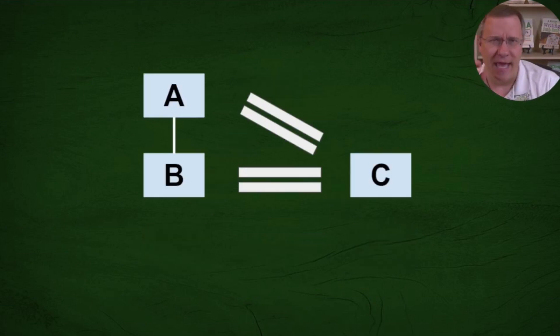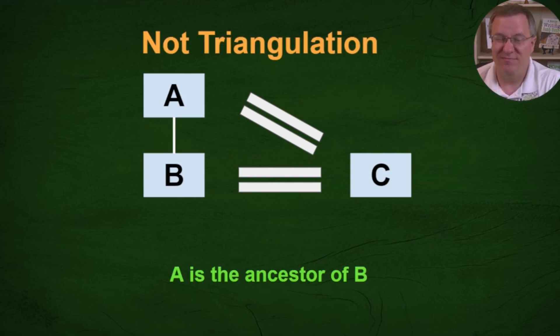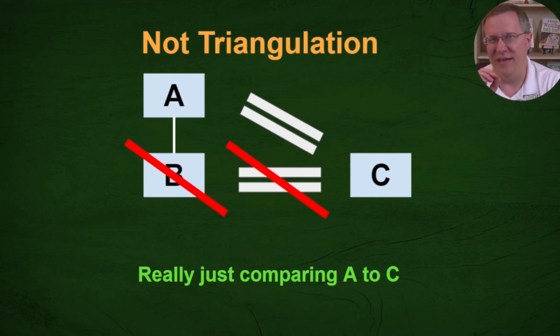We'll start right here. We have A who is the father of B and they both match C. A and B match each other on that segment and A and B both match C on that segment. Sounds like triangulation right? Well no this really isn't triangulation because one of your matches is the ancestor of the other match. In other words any DNA that B got they had to have gotten from A. And so really all you're doing here is you are just comparing A to C. You don't actually have triangulation because that B doesn't matter in this instance. So this is not a case of triangulation.